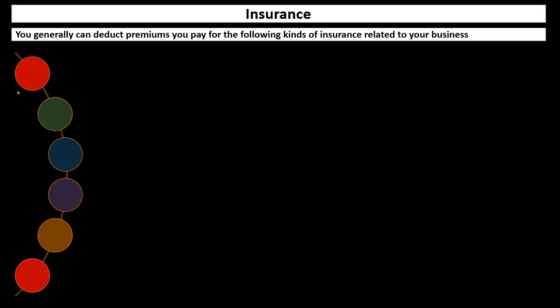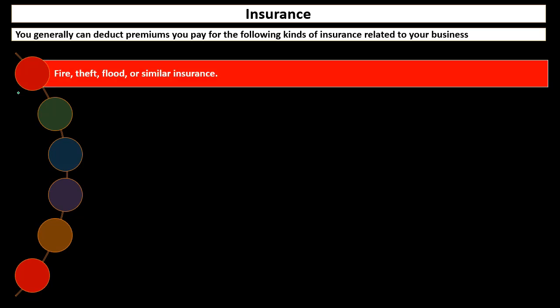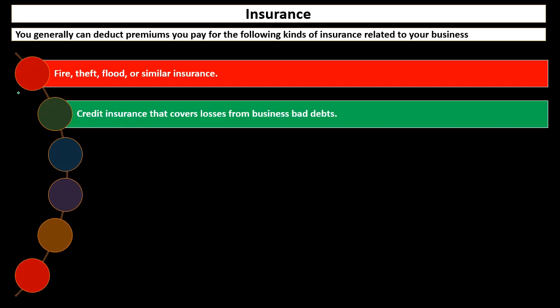Insurance. You generally can deduct premiums you pay for the following kinds of insurance related to your business. They include fire, theft, flood, or similar insurance. The general rule for insurance is that you're covering something that could possibly happen in the future. It is a business expense because you're insuring something used to help generate revenue. Therefore, the expense of the coverage would be a deductible business expense.